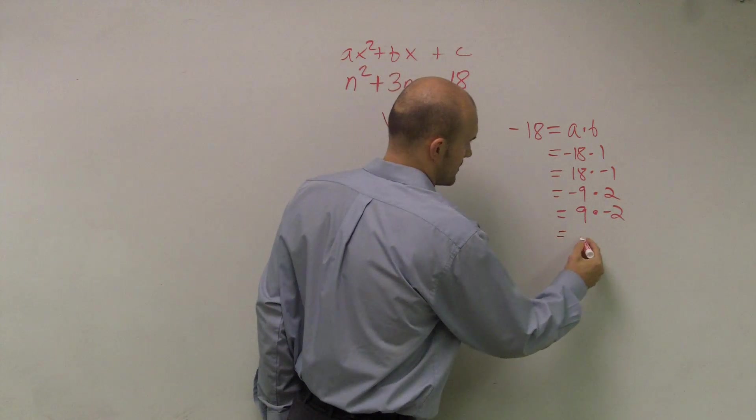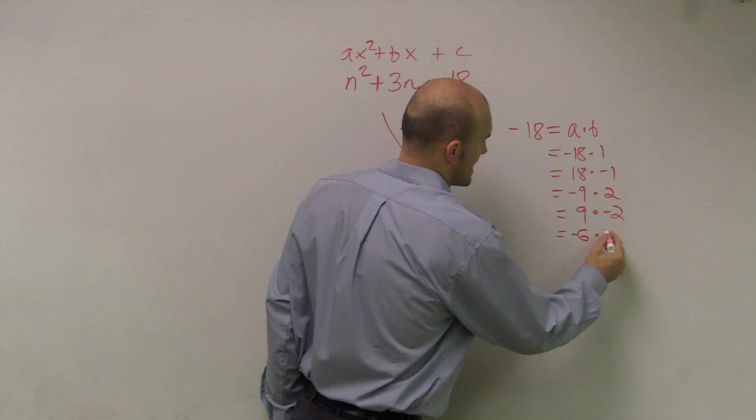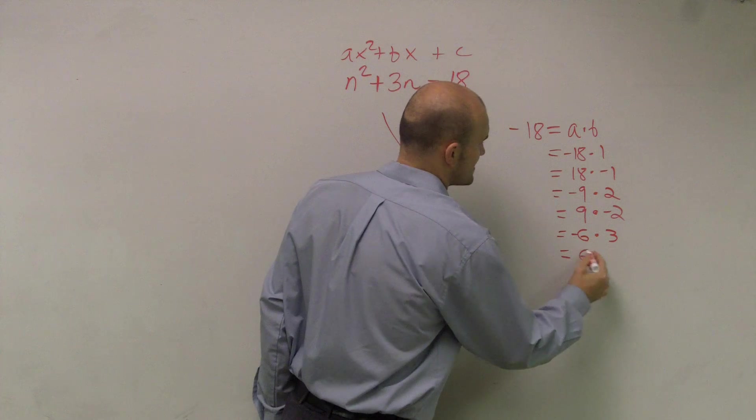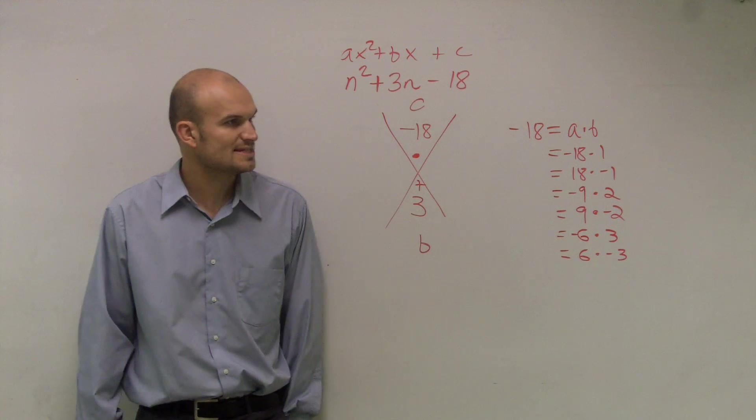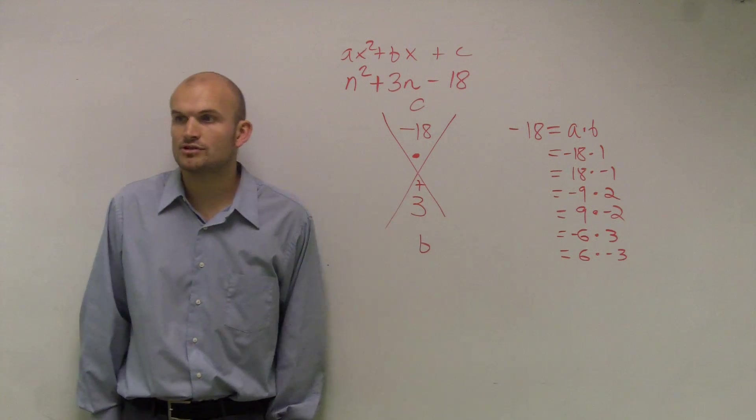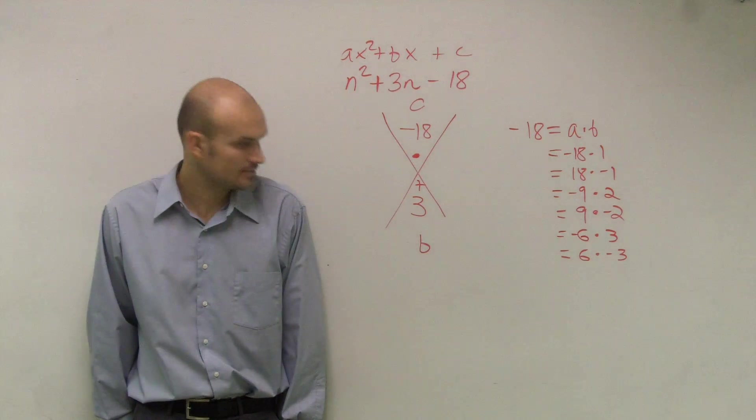So let me work on the next one. Negative 6 times 3 and 6 times negative 3. Again, both of those multiply to give you a negative 18. And do one of those add to give you a positive 3? No.